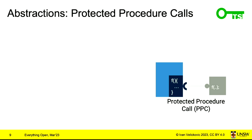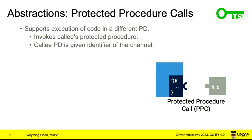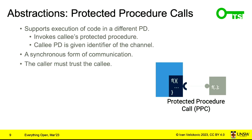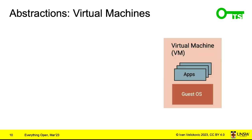The second communication method is protection procedure calls, or PPCs — a way of executing code in a different protection domain. A client protection domain calls into a server, waits for the server to process, and receives a result back. This is synchronous. The caller must trust the callee, because the callee is executing on the caller's behalf.